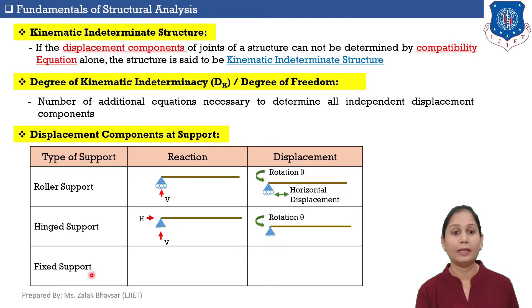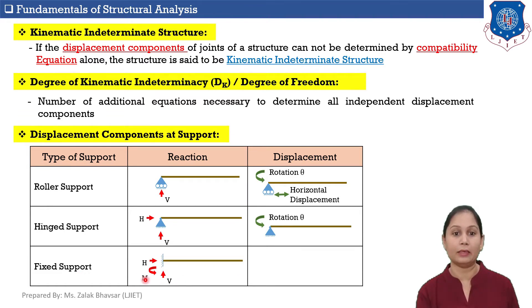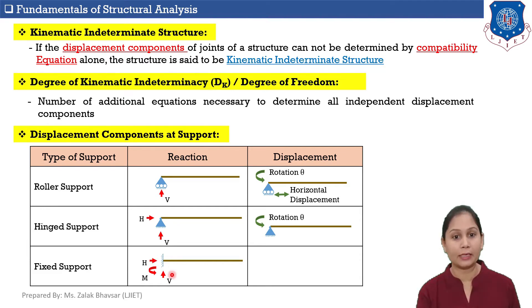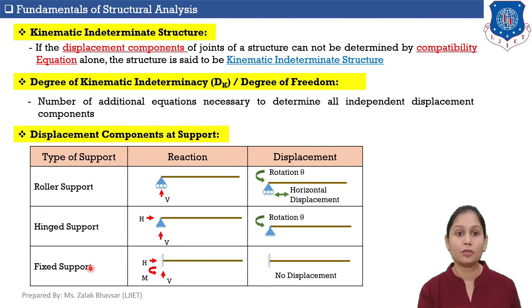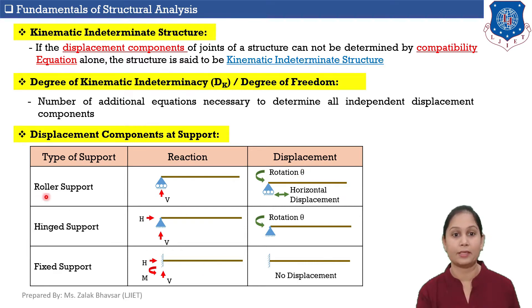In the case of fixed support, it offers three reactions: one horizontal, one vertical, and one moment. Hence, fixed support does not allow horizontal displacement, vertical displacement, or rotation. Therefore, there will be no displacement at a fixed support. For the calculation of kinematic indeterminacy, we need to remember the reactions at each support and accordingly the displacements possible at those supports.